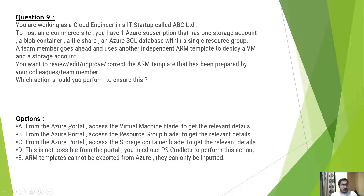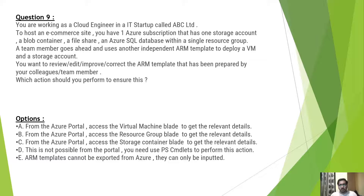The options are: from the Azure portal, access the virtual machine blade to get the relevant details; from the Azure portal, access the resource group blade to get the relevant details; from the Azure portal, access the storage container blade to get the relevant details; this is not possible from the portal and you need to use PowerShell cmdlets; and ARM templates cannot be exported from Azure - they can only be inputted. This question is about your concept of how to export templates from the Azure portal or by other means such as API or cmdlets.